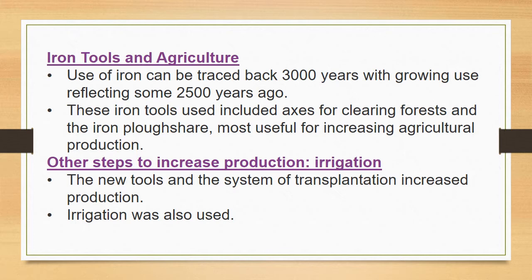First, iron tools and agriculture. The use of iron can be tracked back three thousand years, with growing use reflecting some two thousand five hundred years ago. Iron tools were used for clearing forests and as iron plows for agriculture, which helped in increasing agricultural production. These iron tools helped them a lot for irrigation and in many other ways.